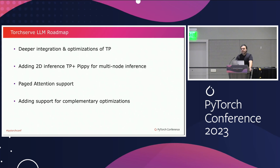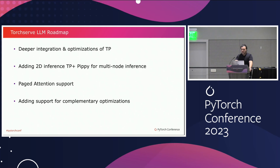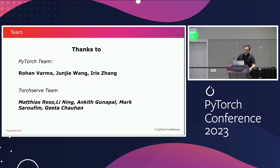For the TorchServe LLM roadmap, we are looking into deeper integration with PyTorch Tensor Parallel and optimizing the inference path. We are looking into 2D inference — adding Tensor Parallel to Pipeline Parallelism for multi-node inference if you are dealing with lower-end GPUs — adding PageAttention support, and adding support for the complementary optimizations I just discussed. Thanks to the PyTorch team — specifically Rohan, Junjie, Iris — and from our TorchServe team: Matthias, Lee, Ankit, Mark, and Gita.